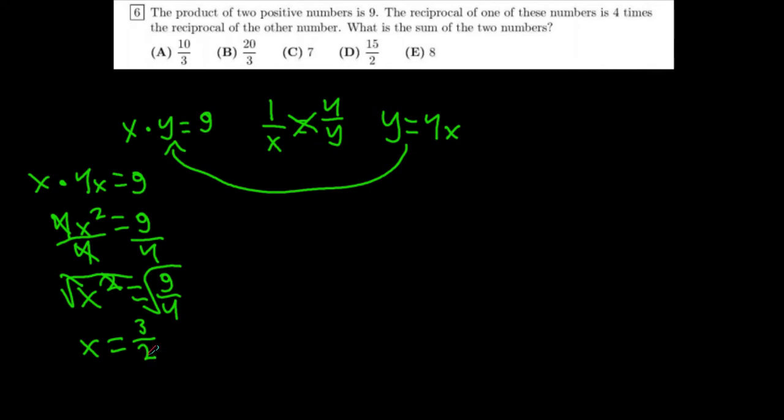And now we have to find the sum of the two numbers. So if x is three halves and y is four x, then four times three halves equals 12 halves.